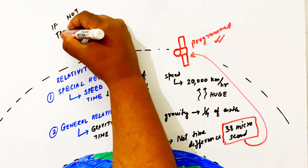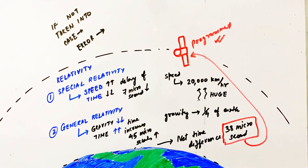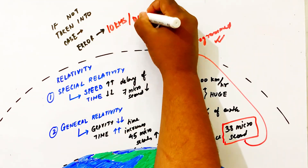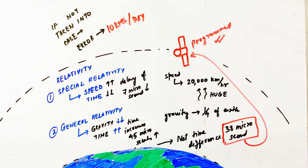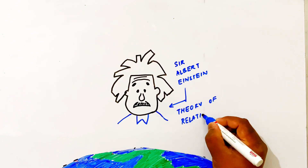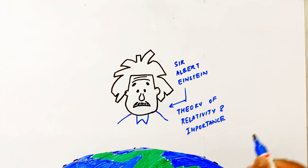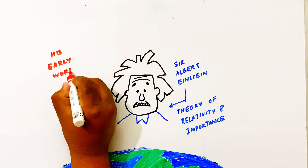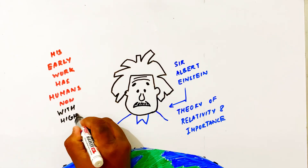This satellite is already programmed to account for this. Without this correction, we would have an error of about 10 km per day, which would make GPS practically useless.